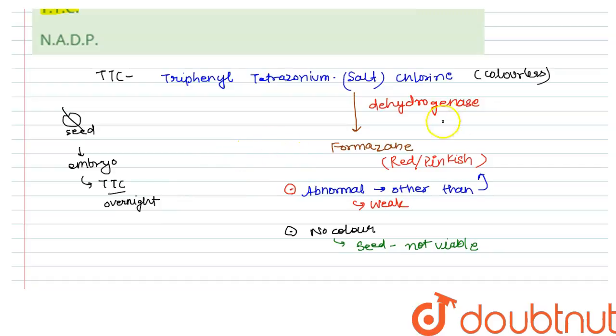If you get any abnormal colors, that means the seed may or may not be able to germinate. And if you get no color, sorry for you, no seed, no plant for you.